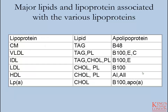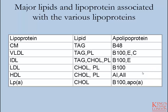The major lipids and lipoproteins associated with each of these various lipoproteins is listed here. Chylomicrons primarily contain triacylglycerides and their primary apolipoprotein is B48. VLDL contains both phospholipid and TAG; its primary apolipoproteins are B100, E, and C. IDL contains a mixture of TAG, cholesterol, and phospholipid; its primary apolipoproteins are ApoB100 and ApoE. LDL contains primarily cholesterol but also phospholipid, and its primary apolipoprotein is ApoB100. HDL particles contain higher levels of cholesterol and phospholipid, with apolipoproteins A1 and A2. Lipoprotein A primarily contains cholesterol with a B100 apolipoprotein and a modified ApoA.